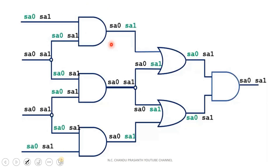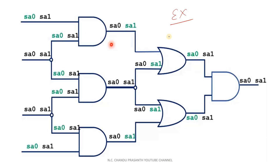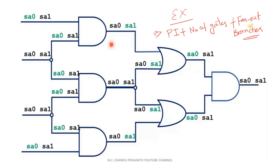Let me give you a simple example. It is a complex circuit which consists of totally 6 gates. Let me apply the concept called Fault Equivalence to this particular circuit. Our main primary duty is to find out the number of fault sites in the circuit using the standard formula: number of primary inputs plus number of gates plus fanout branches. We can just apply this formula and get the number of faulty sites.